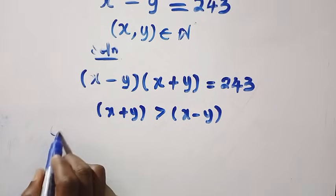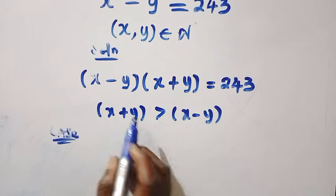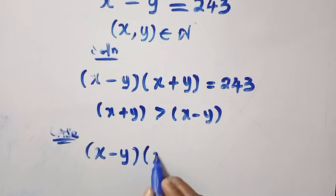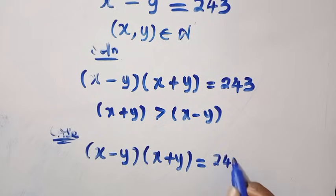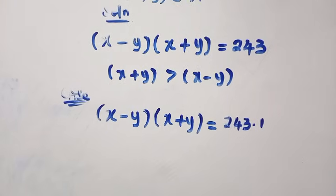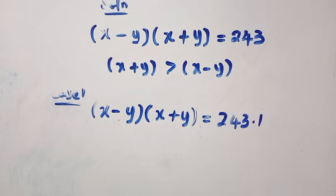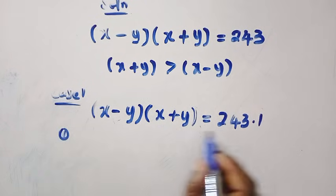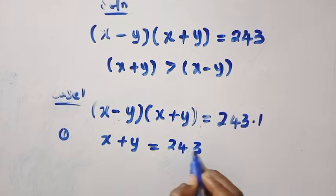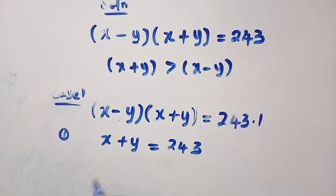The first case is when we have (x minus y) multiplied by (x plus y) equals 243, given as 243 multiplied by 1. So then, for this case, we have x plus y equals 243, which is greater than x minus y, and x minus y equals 1.